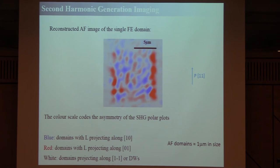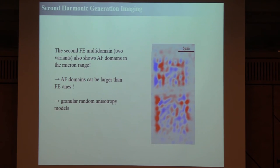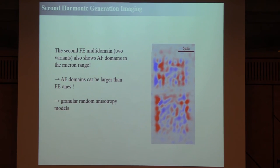The typical antiferromagnetic domain size is about one micron. Interestingly, even in the second pattern — which was not a single ferroelectric domain — the antiferromagnetic domains are also in the micron range. This means antiferromagnetic domains can actually be larger than the ferroelectric domains. It's analogous to a granular ferromagnetic medium: if the granularity is too small compared to the magnetic length scale, you see a global average and decouple the two length scales. Here, the ferroelectric domains are so tiny that the antiferromagnetic order sees a big average and recovers its natural size of about one micron.